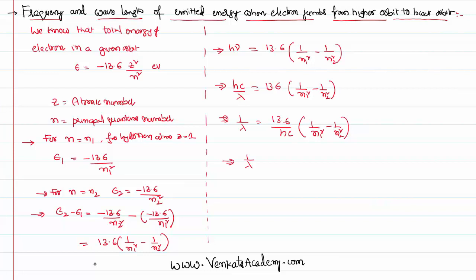If you substitute the value of Planck's constant 6.6 into 10 power minus 34, c 3 into 10 power 8 meter per second velocity of light, all that will be automatically constant because 13.6 is also constant. All that constant together is called Rydberg constant, named after a scientist Rydberg, where the value of that Rydberg constant is 1.097 into 10 power 7 meter inverse.